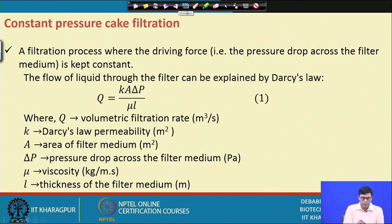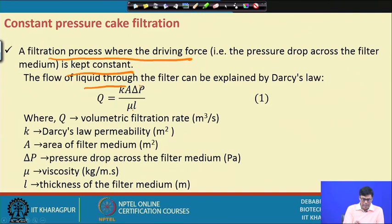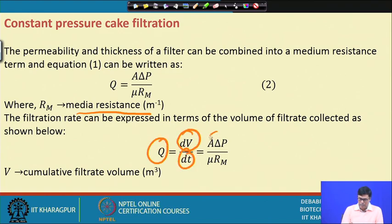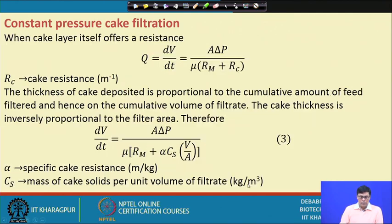In constant pressure cake filtration, the driving force is kept constant. The flow of liquid through the filter is given by Q = K × A × ΔP / (μ × L), where K is Darcy's permeability, A is the filter area, ΔP is the pressure difference across the filter media, μ is the viscosity, and L is the thickness of the filter media. This can also be written as Q = A × ΔP / (μ × Rm), where Rm is the media resistance. The flow rate dV/dt equals A × ΔP / (μ × (Rm + Rc)), where Rc is the cake resistance.